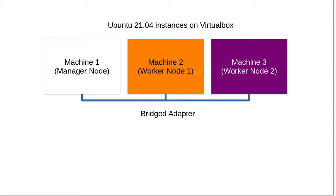For this demonstration I'm using the following setup. I have three Ubuntu 20.04 instances running in VirtualBox. The first one is my Machine 1 which I will be using as the Manager node. My second one is Machine 2 which I will be using as the Worker node. My third one is Machine 3 and I will use that also as a Worker node. If you want to set it up similarly, you would need to use the bridged adapter in the network settings in order for these VirtualBox instances to talk to each other.